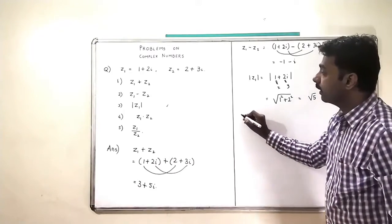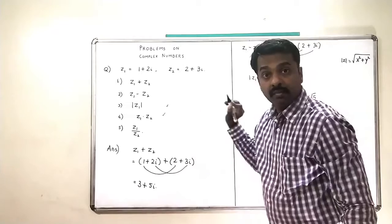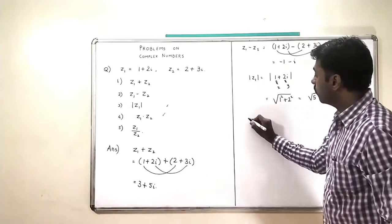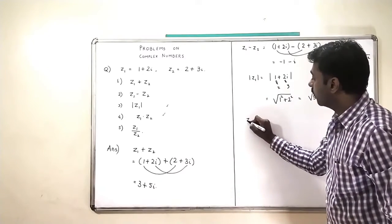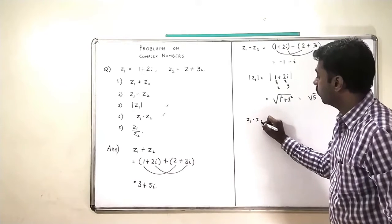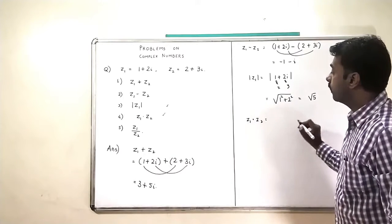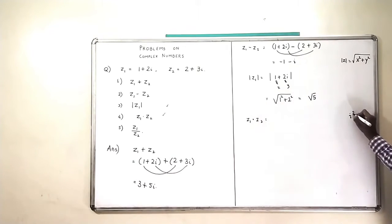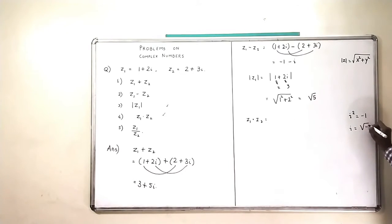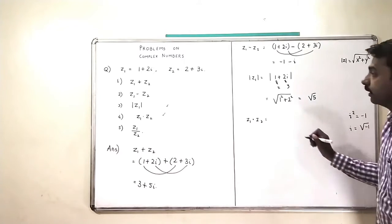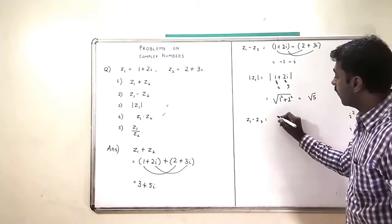The fourth part is we will find what is Z1 into Z2; we will multiply the two complex numbers. Here you have to use somewhere that i squared is given by minus 1. Because i was the square root of minus 1, this means that i squared is minus 1. Let us see where I am using that.